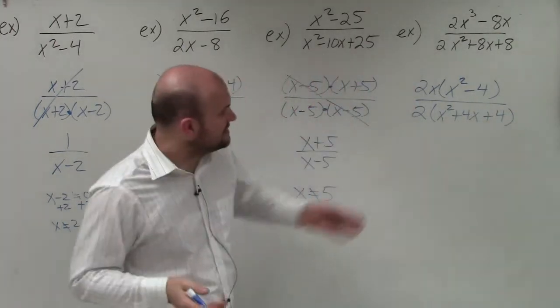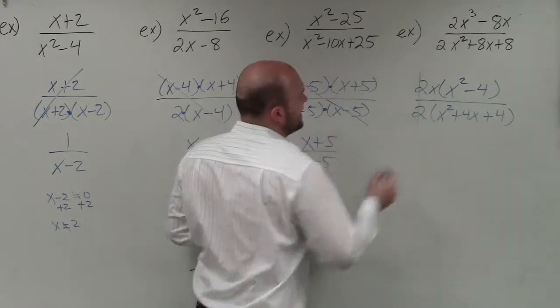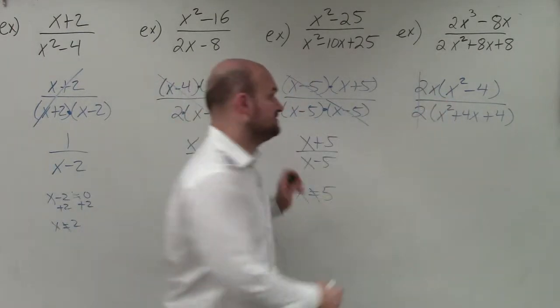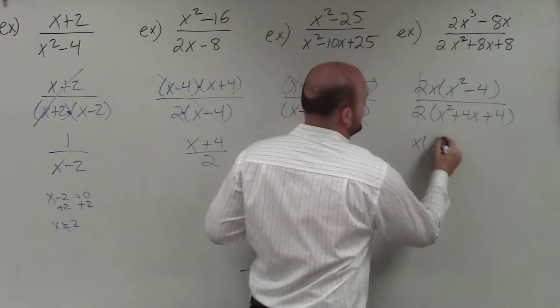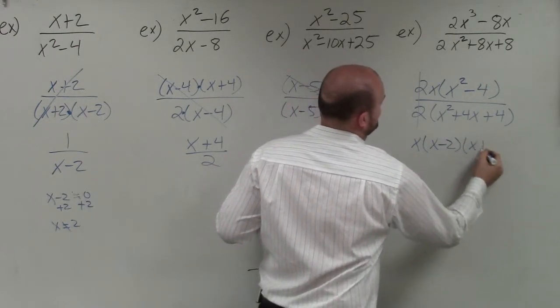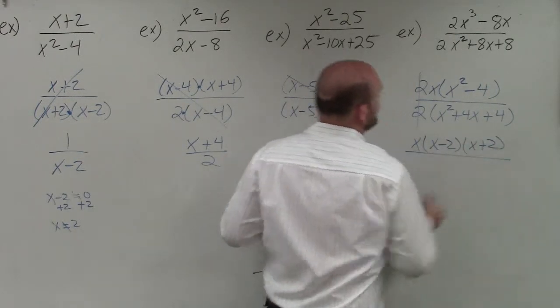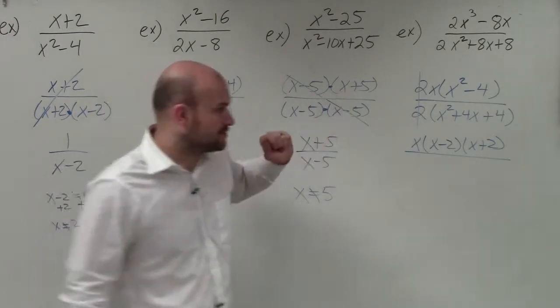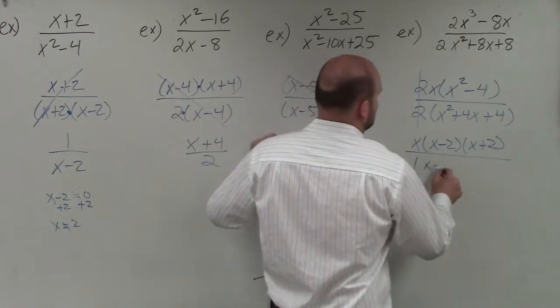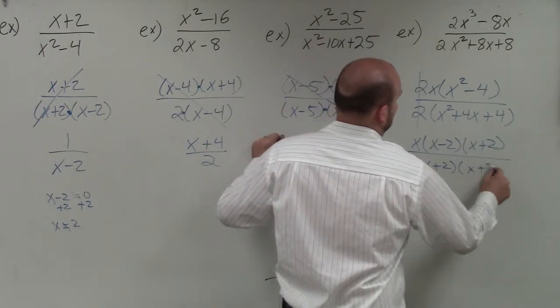And now we can see that first, these 2s, those divide out using the division property. Here is another example of difference of two squares. So I have x times x minus 2 times x plus 2. And then in my denominator, that is an example of a perfect square trinomial, which would be x plus 2 times x plus 2.